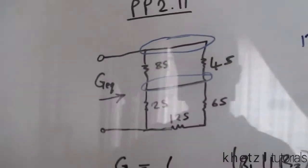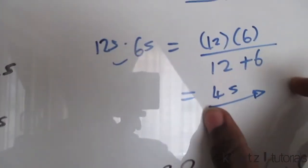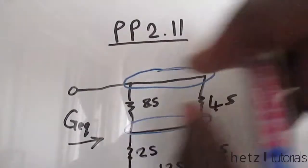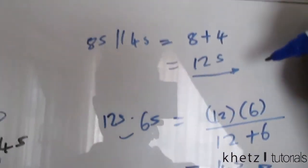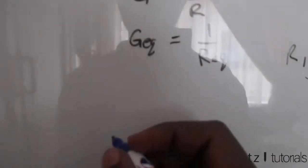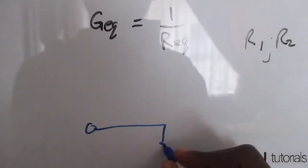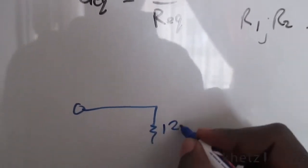Then we have, so we've collapsed this part into four Siemens. We've collapsed these two into 12 Siemens. We can now draw the new circuit. Drawing the new circuit from our calculations, we have the terminals. We have the 12 Siemens, which we calculated.